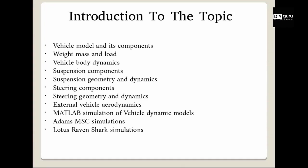Then we will talk about vehicle body dynamics, dealing with the different components of the vehicle body and how they behave under dynamic conditions. Then we will cover suspension components — defining the particular components of the suspension system and what role they play in suspension design, geometry, and dynamics. Once we understand the suspension components, we can move into suspension geometry and dynamics, defining how different components can be combined in different geometries to achieve different dynamic conditions as required by the driver or manufacturer.